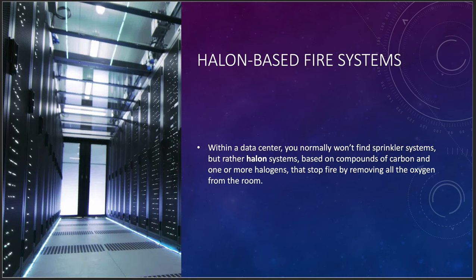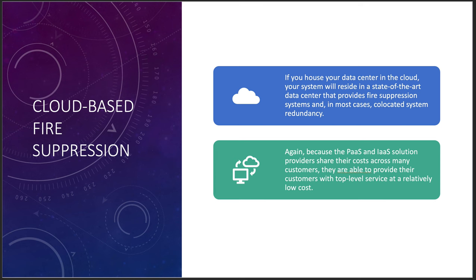If your systems reside in a state-of-the-art data center in the cloud and a region or zone burns to the ground, if you've architected for disaster recovery and business continuity, you'll never notice a problem. If you haven't, you'll have a serious problem. There are companies in Seattle that went out of business because they didn't architect well when a co-location facility burned down. You can architect your way out of a lot of these situations with multi-zone, multi-region design.